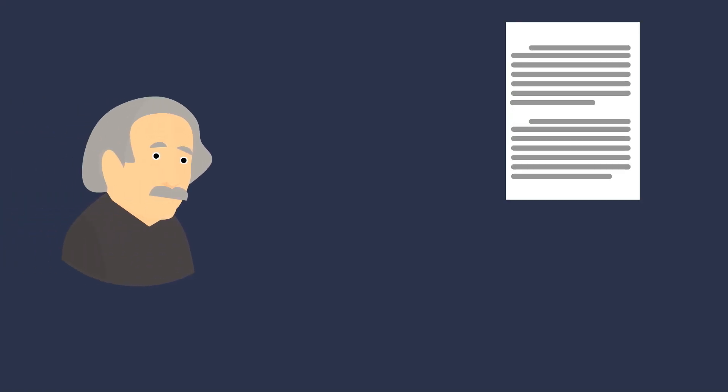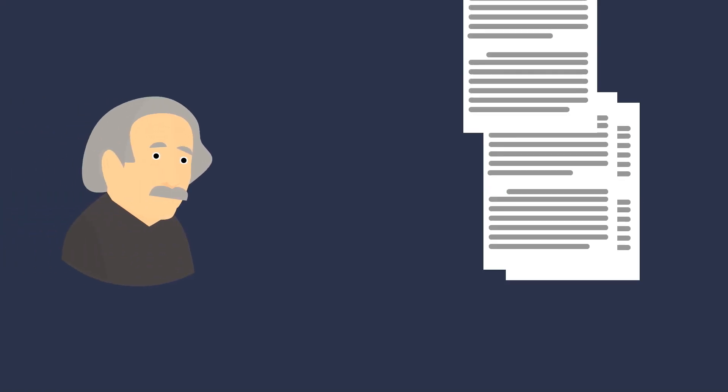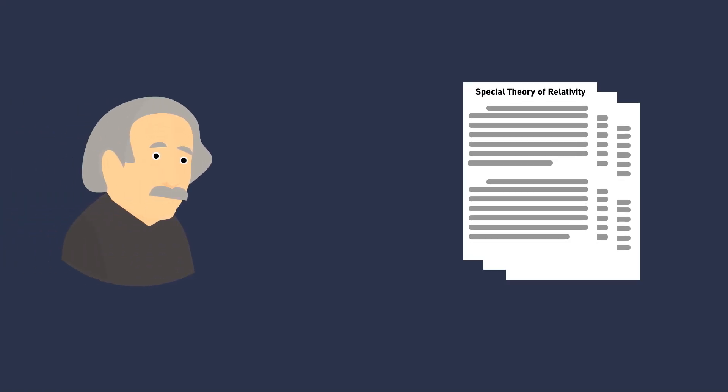In 1905, Albert Einstein published a paper in which he gave two statements about the moving body, which is called the Postulate of Special Theory of Relativity.